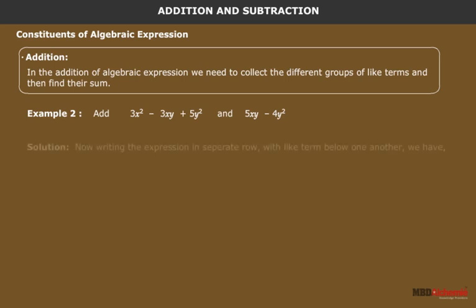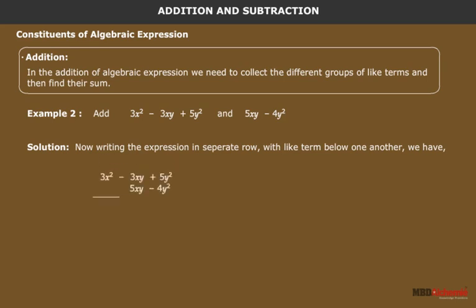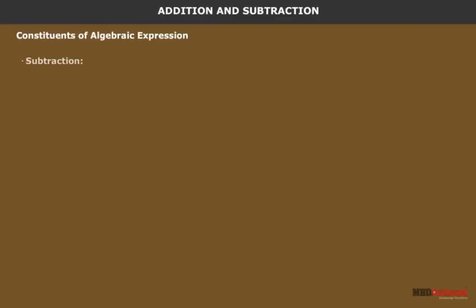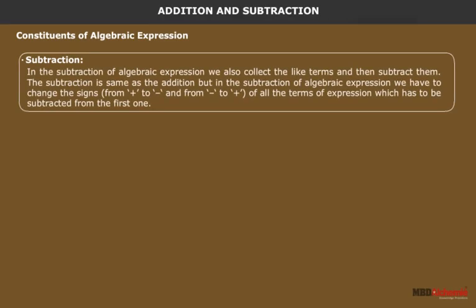Example 2: add 3x squared minus 3xy plus 5y squared and 5xy minus 4y squared. We write the expressions in separate rows with like terms below one another and add them. The result is 3x squared plus 2xy plus y squared.